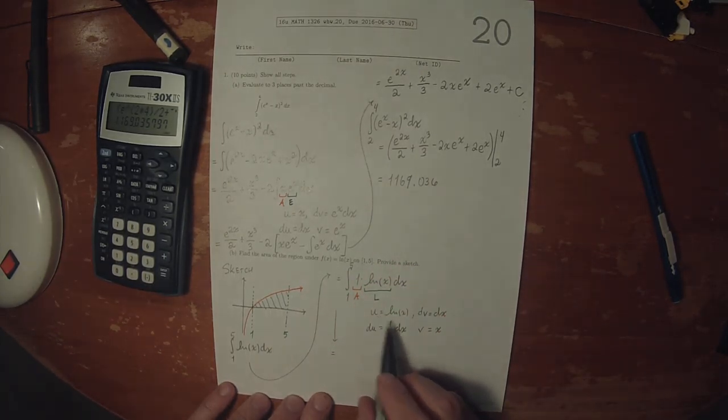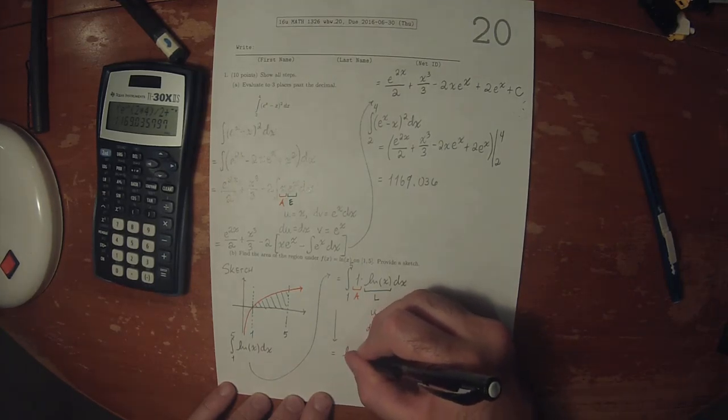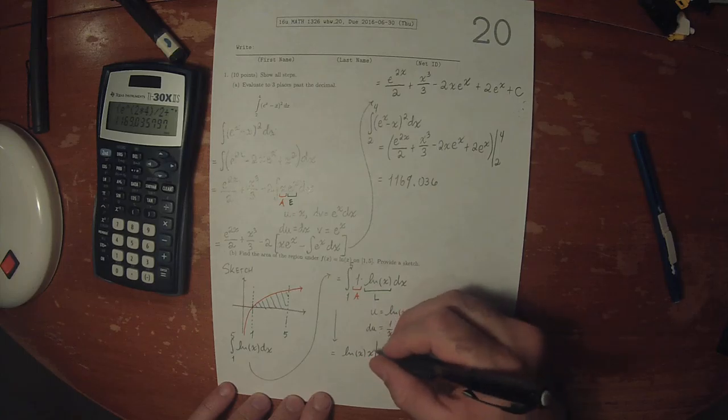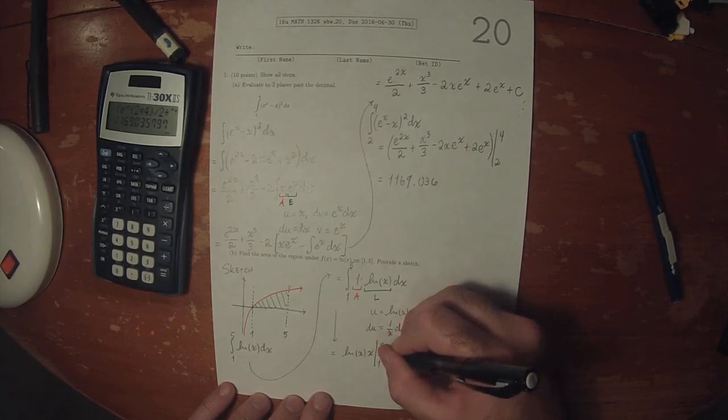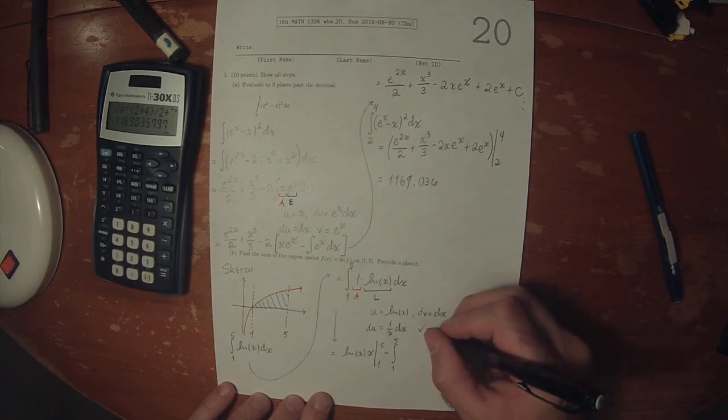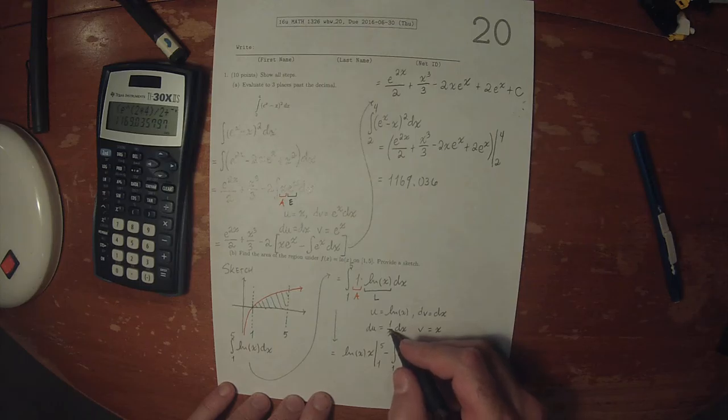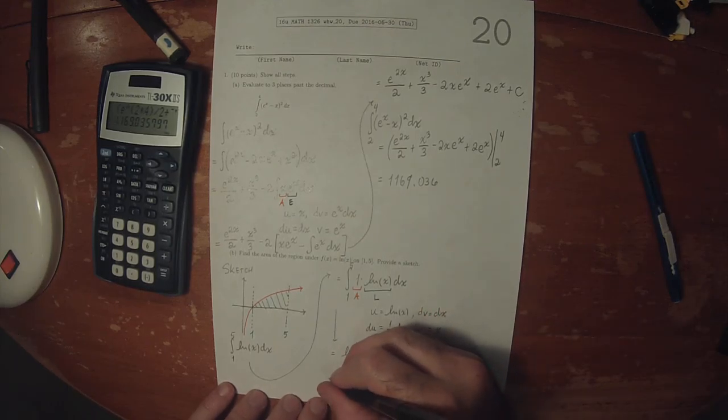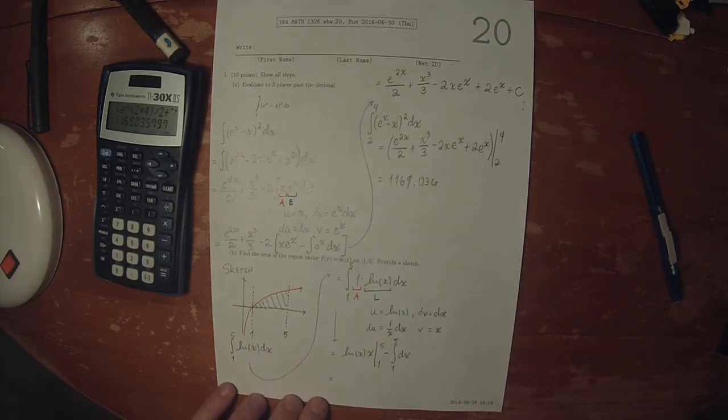So then it will be u times v: log x times x, evaluated from 1 to 5, minus integral 1 to 5 of v du. So x times 1 over x cancels, and we just get dx.